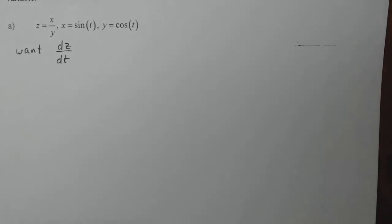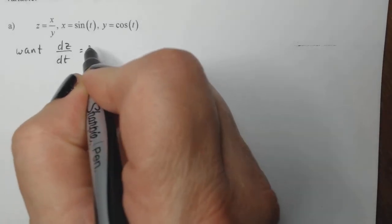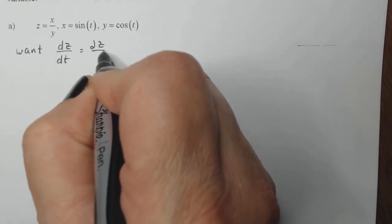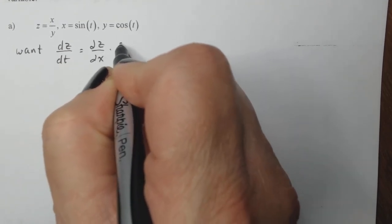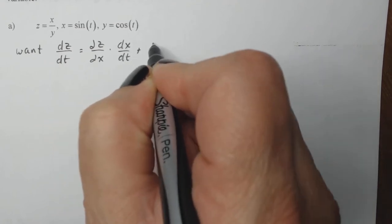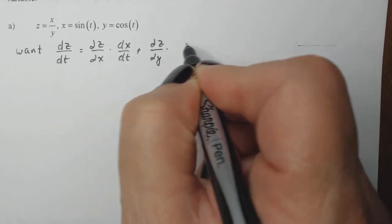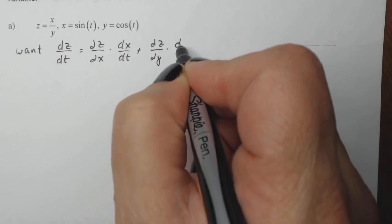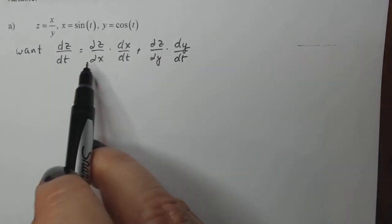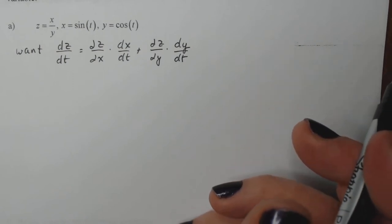So if I want dz/dt according to the chain rule, that's the partial of z with respect to x times dx/dt, plus the partial of z with respect to y times dy/dt. All I do is find those four pieces and multiply them together.